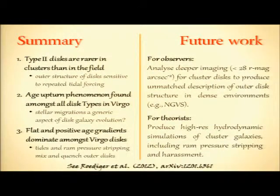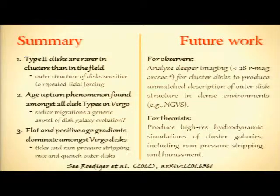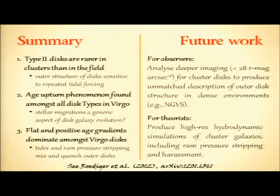To summarize the results of our study: we first found that type 2 disks are rarer in clusters than in the field, also in keeping with recent results by Peter Irwin who found a complete absence of type 2 features in Virgo lenticular galaxies, and which may be saying something significant about the sensitivity of outer disk structure to effects like tidal forces or galaxy harassment. We also found that the age upturn phenomenon predicted by models exists within all types of Virgo galaxies, which may speak to the role of stellar migrations in their evolution, but that most disks in this cluster are described by flat or positive age gradients, which we interpret as being due to these environmental effects.